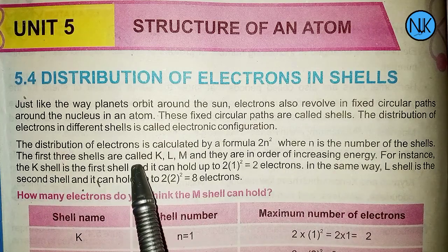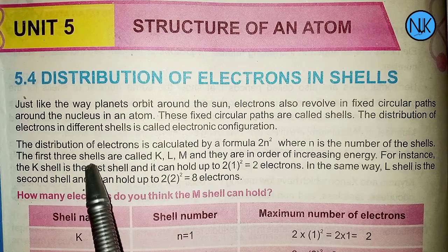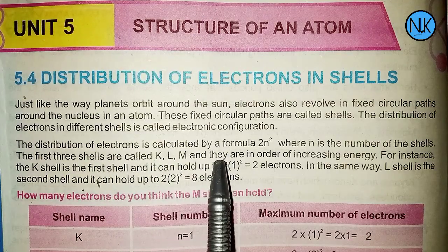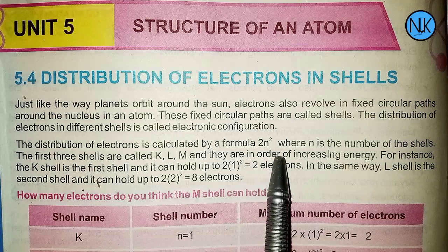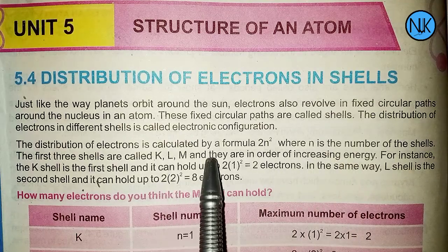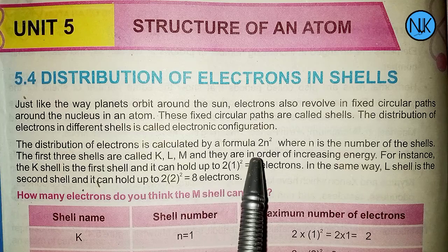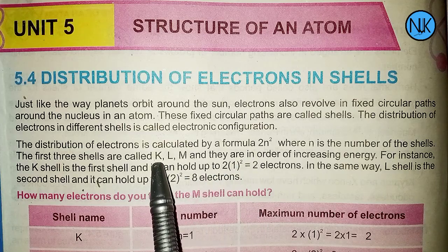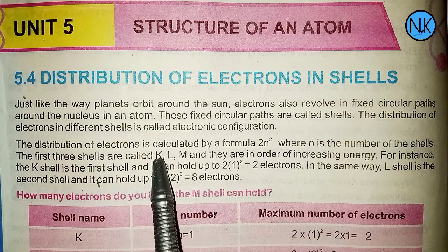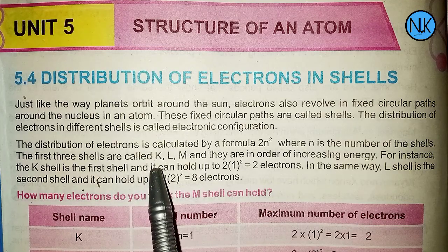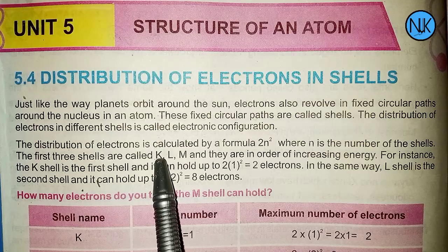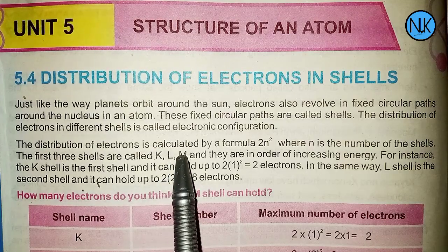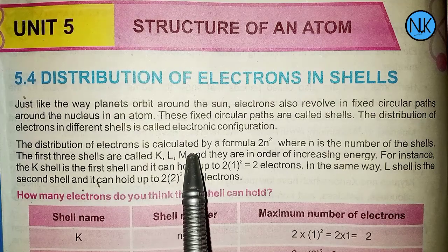The shells are called K, L, M and are in order of increasing energy. The K shell is the first shell, closest to the nucleus. Each shell can hold up to 2n squared electrons.